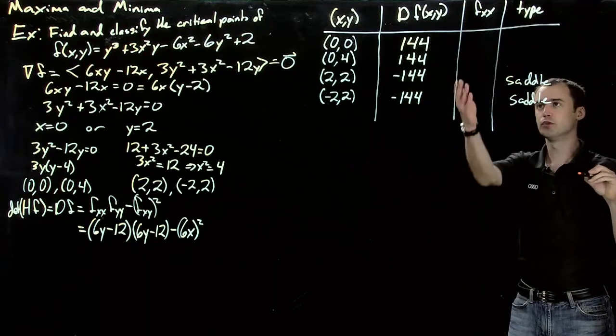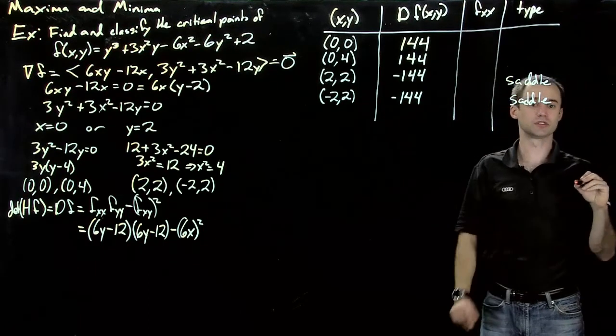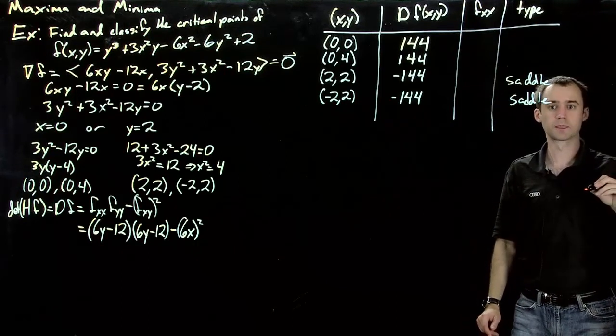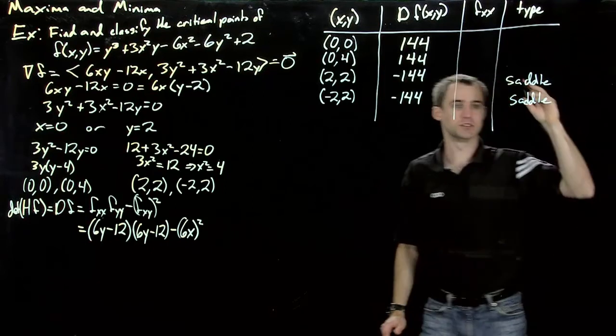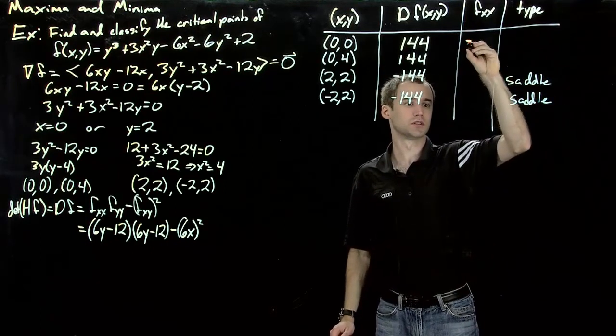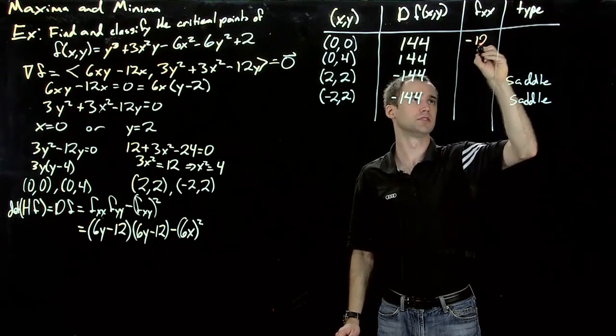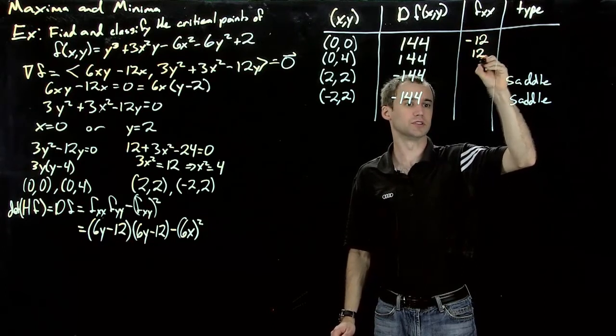Now for the two remaining cases, we have to figure out what the second derivative is. So I'll let you compute it at home and skip to the answer. This one is minus 12. And this one is 12.